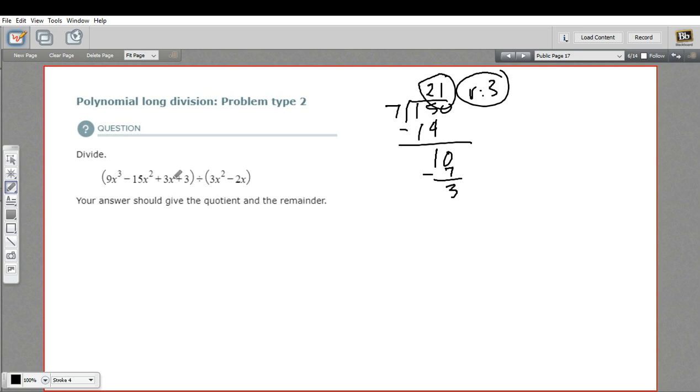In this case we've got the third power, second power, first power, zero power of x. That's all good. It's in descending order, there are no gaps. If there was a gap, let's say we had no x squared term, we would fill that in with a plus zero x squared. But in this case we don't have to worry about it.